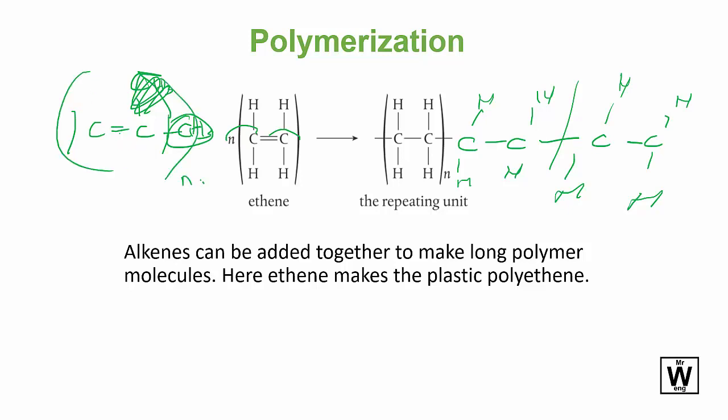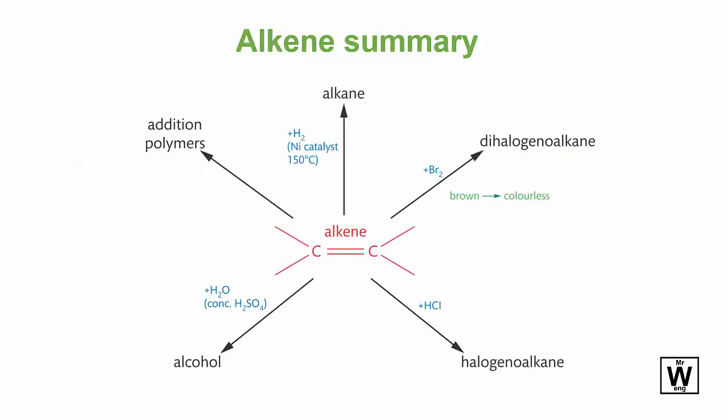So go grab a few of those practice questions and here is the summary for alkenes. So as you can see you're just adding a whole heap of stuff to them to make different things, so polymers, alcohols, halogens, or alkanes are the main things we do to alkenes.